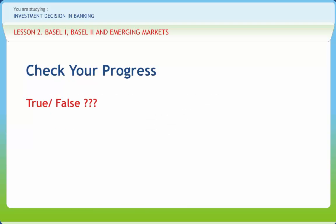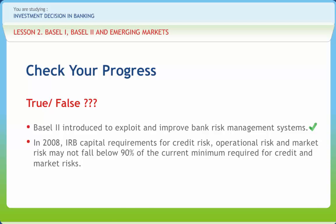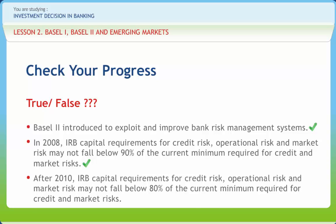Now let's see how much you have learned. State whether the following statements are true or false. Statement: Basel II was introduced to exploit and improve bank risk management systems. Answer: True. Statement: In 2008, IRB capital requirements for credit risk, operational risk, and market risk may not fall below 90% of the current minimum required for credit and market risks. Answer: False.